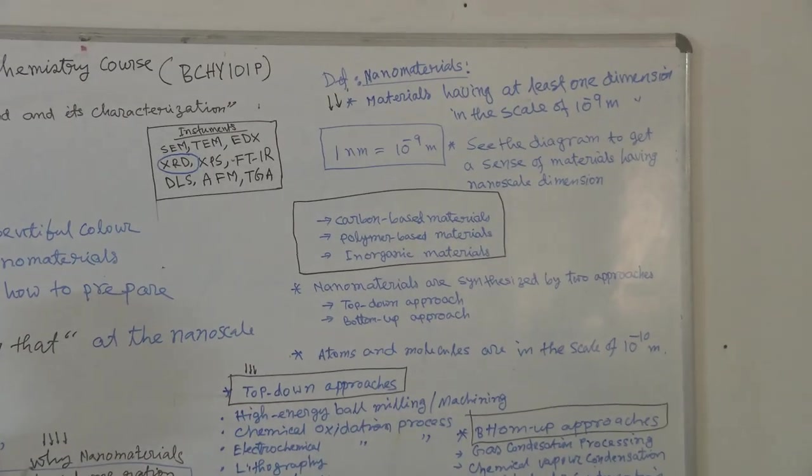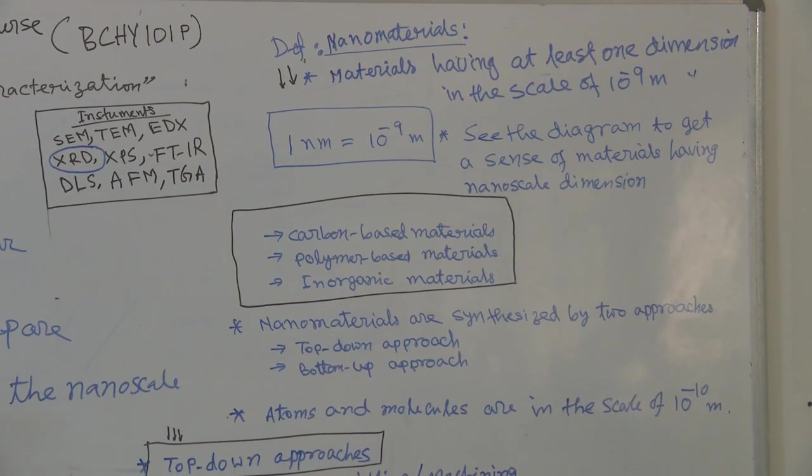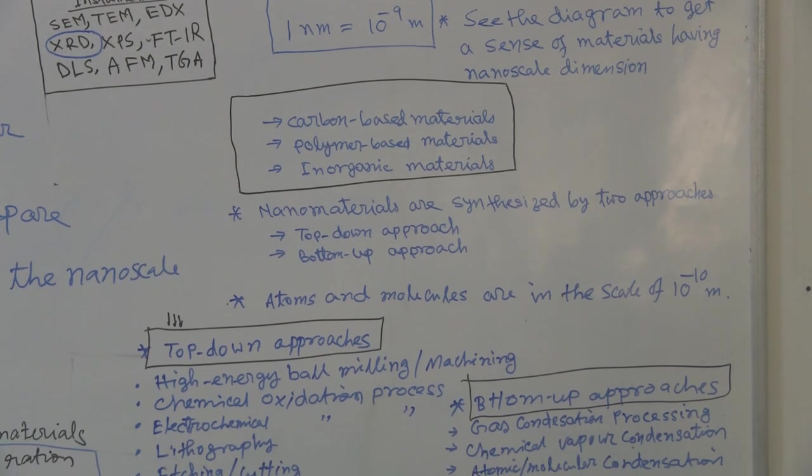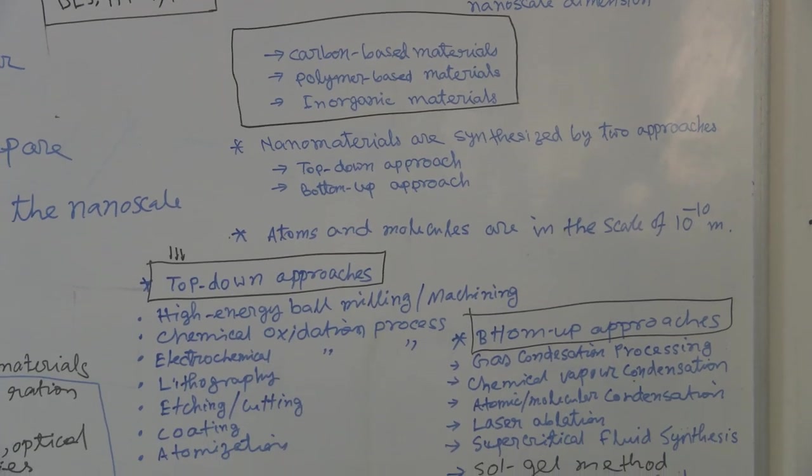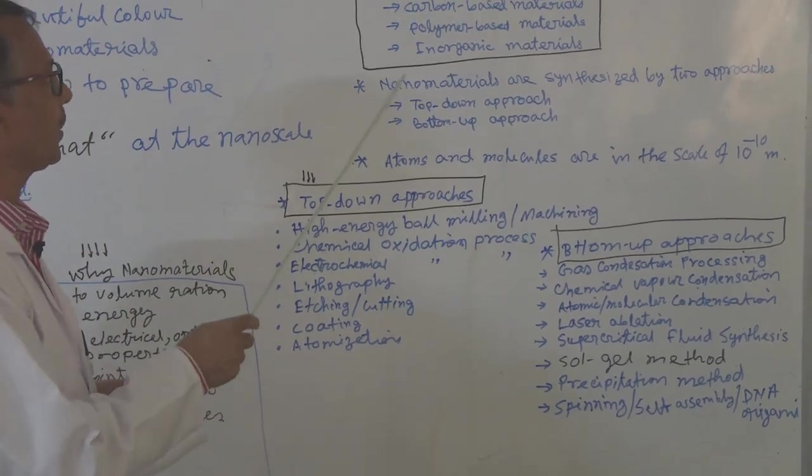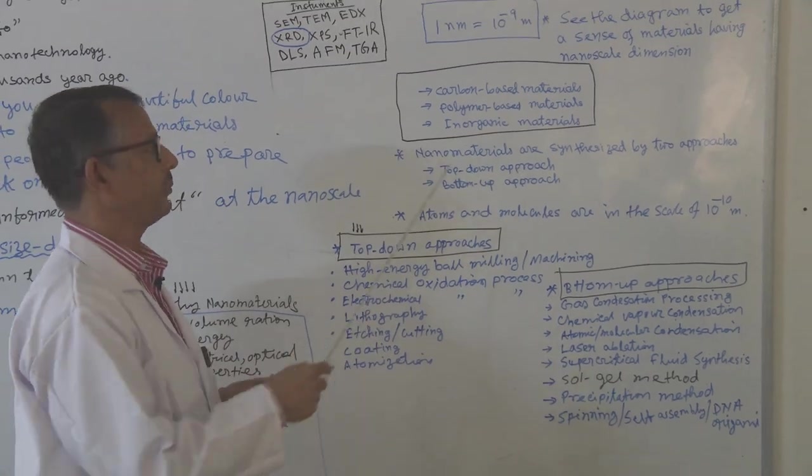You can get a sense of materials having nanoparticles or nanometer scale. Now we have different types of nanomaterials, like carbon-based materials, polymer-based materials, and inorganic materials.